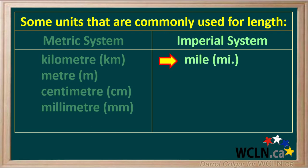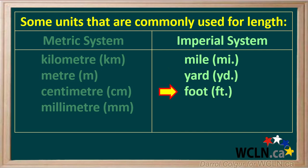A unit used for long distances in the imperial system is a mile. For shorter distances, we use a yard. There are seventeen hundred and sixty yards in a mile. A foot is a very common unit of length in the imperial system. There are three feet in one yard. A smaller unit is an inch. There are twelve inches in one foot. To measure objects smaller than one inch, fractions of an inch are used.